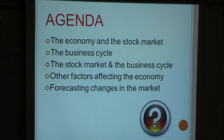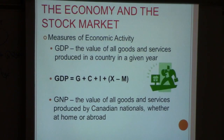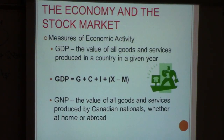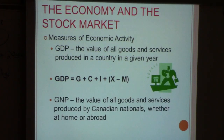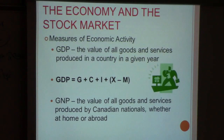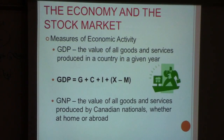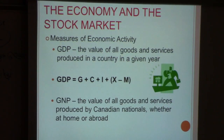As a reminder, one of the biggest measurements of economic activity is GDP — gross domestic product. The formula is G + C + I + (X - M), where G stands for government spending, C stands for consumption, I is investments, and X minus M is exports minus imports.